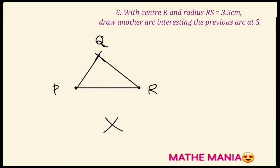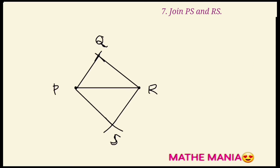This point of intersection will be named as S. Using your scale, join PS and PR and thus we get the quadrilateral PQRS.